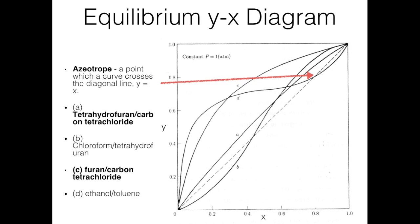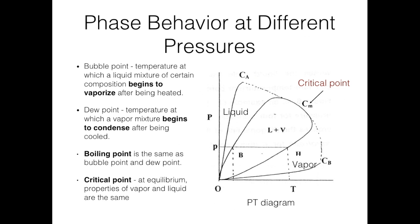Where the equilibrium line crosses the diagonal one-to-one y-x line, that point is called the azeotrope. This illustrates the phase behavior of multicomponent systems at different pressures.